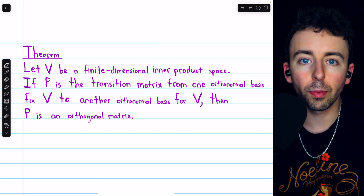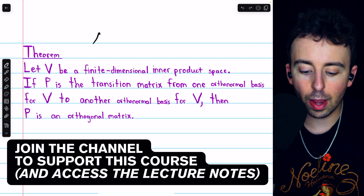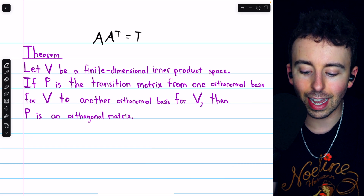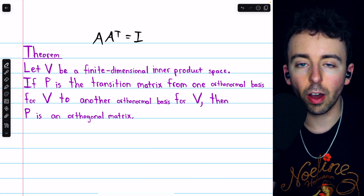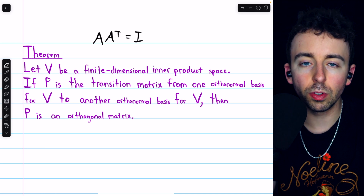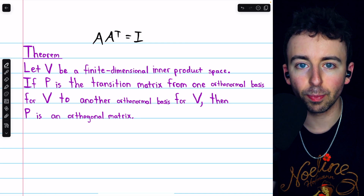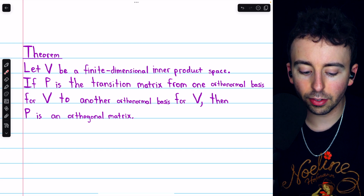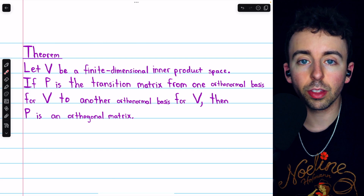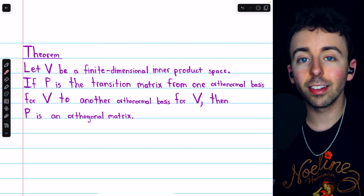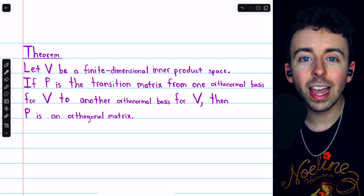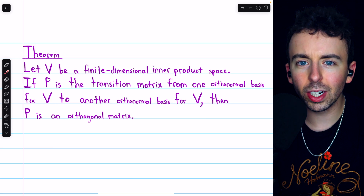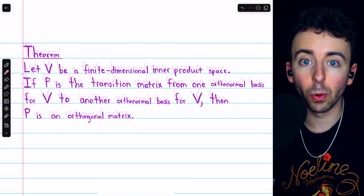We previously introduced orthogonal matrices. It's a special type of matrix that, when multiplied by its transpose, yields the identity. In other words, an orthogonal matrix is a matrix whose inverse is its transpose. I'll leave a link in the description to the video where we go over those. We also went over some examples of orthogonal matrices, such as the standard matrix for reflection and the standard matrix for a rotation. And in this video, we're going to talk about rotations a lot more.